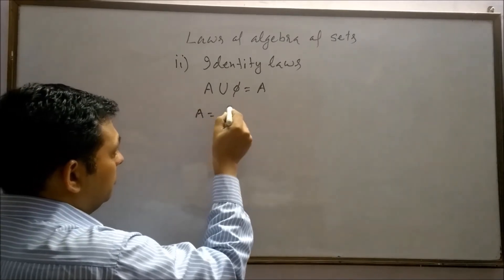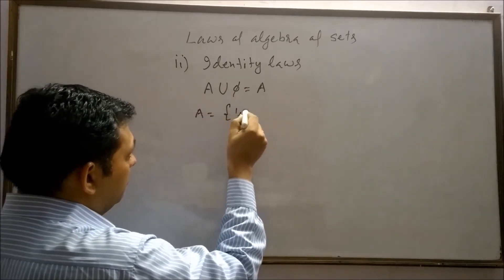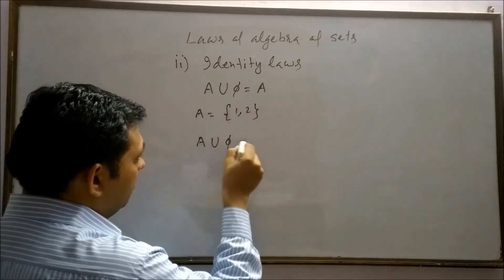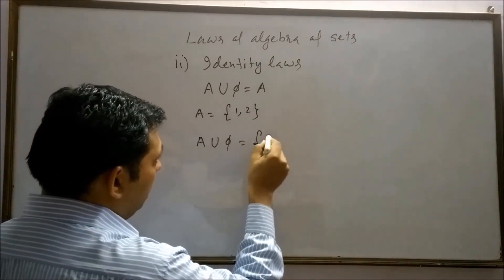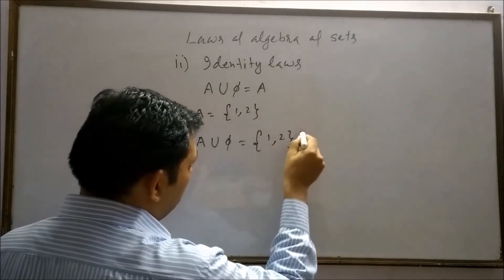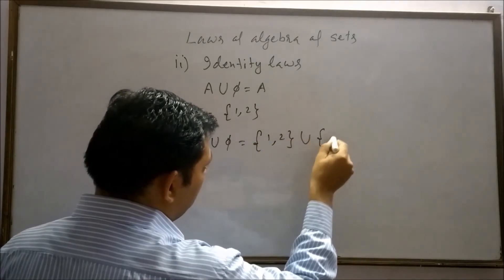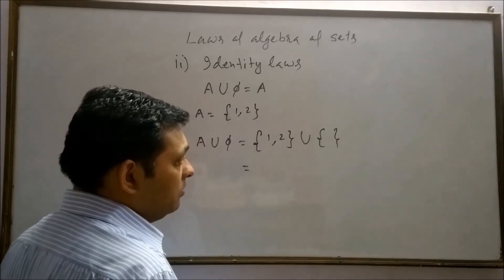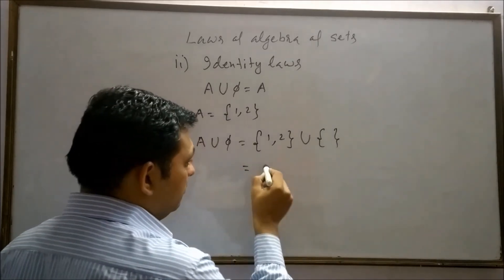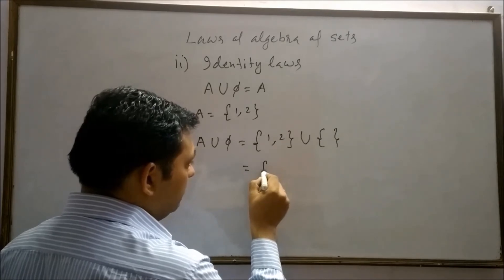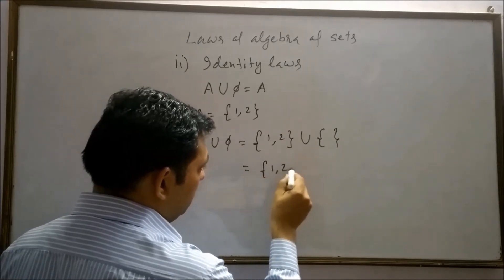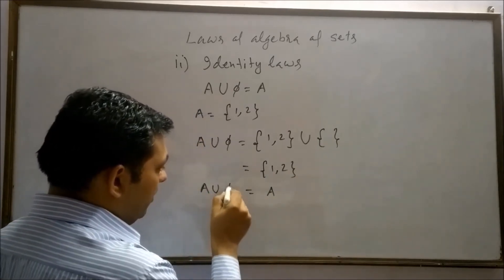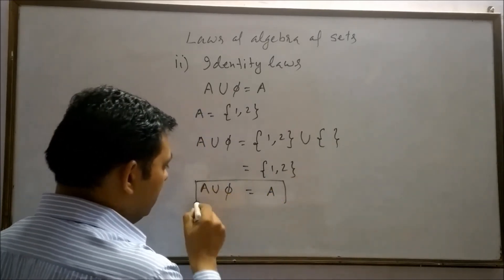A union phi will equal {1, 2} union empty set. What do we get? Definitely set A. Therefore, A union phi is always A.